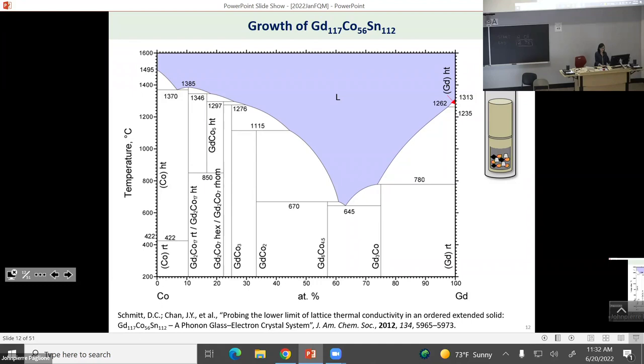But what happens is, in this case, this is not a tin-rich phase. And what happens is, if you put a lot of tin to try to make this, you end up making the 1,1,2 compound. Gadolinium cobalt 2. So that's not any good. But it turns out that, if you look at the phase diagram here, I have cobalt and gadolinium. This is fascinating about phase diagrams.